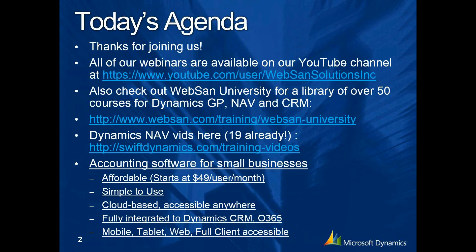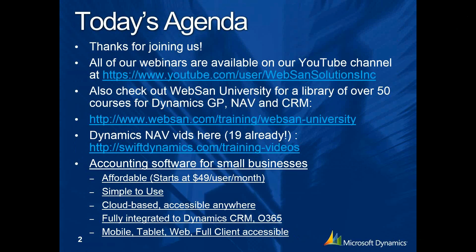WebSand is traditionally a Dynamics GP and CRM partner as well as Office 365. Now we're adding through SwiftDynamics.com an affordable solution — really Dynamics NAV for small business, if you're familiar with Navision. A light user license starts at just $49 a month, very different from the Dynamics GP solution. It's 100% cloud-based on Microsoft's infrastructure and accessible anywhere in the world 24/7.